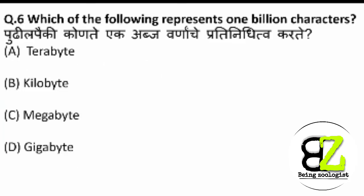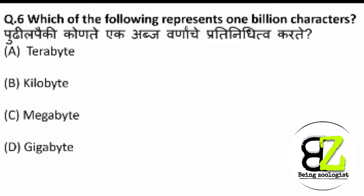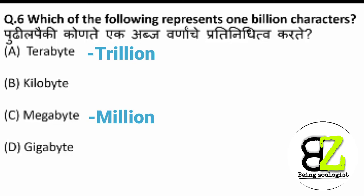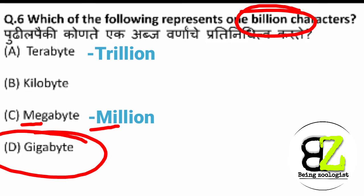Next question: 'Which of the following represents 1 billion characters?' These are your 4 options. The correct answer is Gigabyte, which is option D. To remember this easily: Terabyte is for trillion — both start with 'T'. Similarly, Megabyte is for million — both start with 'M'. And Kilobyte represents one thousand characters. This way you can memorize the units using the common first letters.